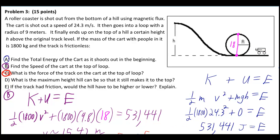A roller coaster is shot out from the bottom of a hill using magnetic flux. The cart is shot out at a speed of 24.3 meters per second. So it's shot out from the bottom of a hill, which means it's going in this direction. It then goes into a loop with a radius of 9 meters.